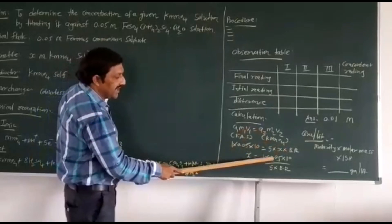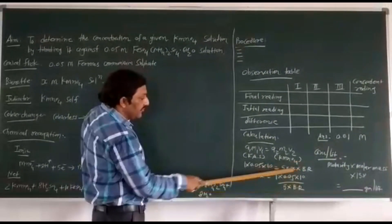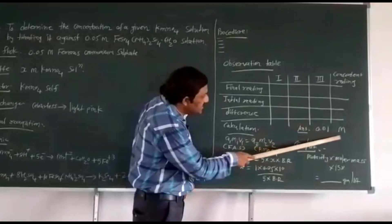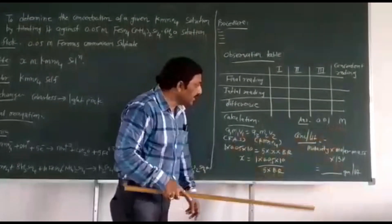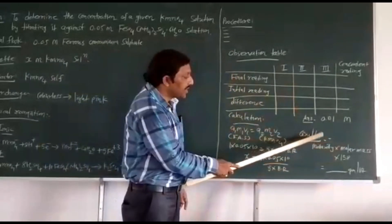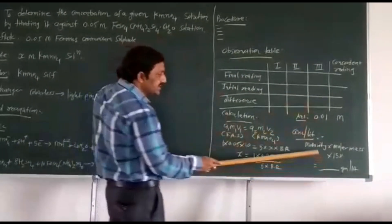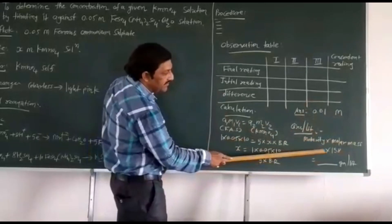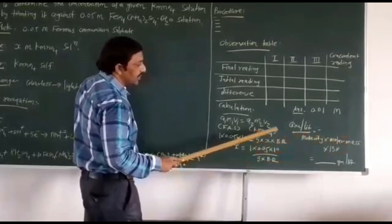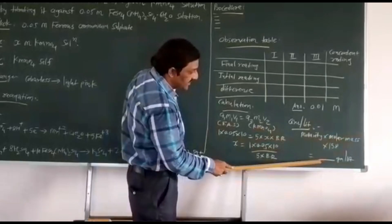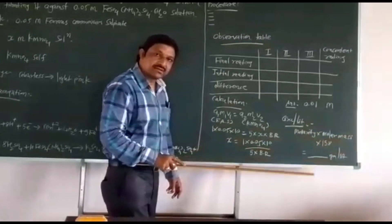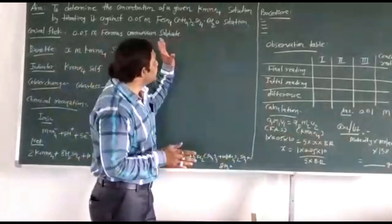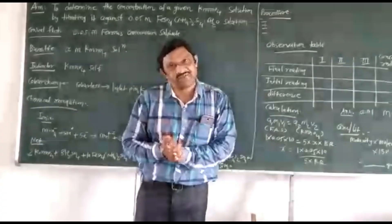X equals 1 × 0.05 × 10 divided by 5 divided by your burette reading. Your answer is nearly 0.01 molar. And lastly, we have to find out grams per liter. Formula: molarity multiplied by molar mass. Here molarity multiplied by 158 — KMnO4 molecular mass is 158. This is your first practical: X molar KMnO4 versus 0.05 molar ferrous ammonium sulphate.